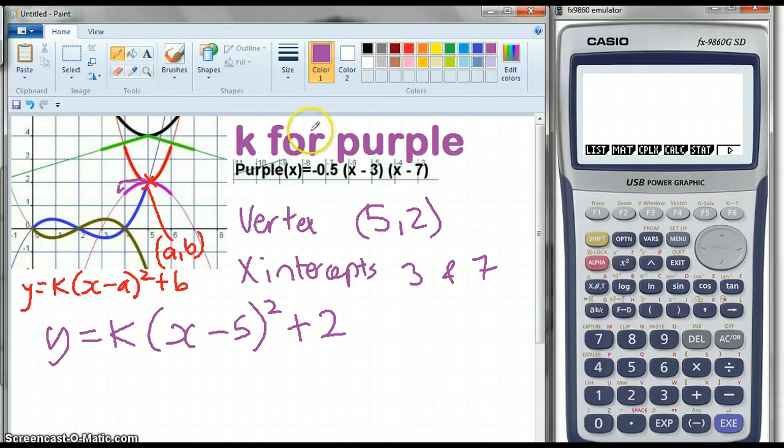I need to sub a point in. So the point I'm going to use in this case, to confuse matters, is actually going to be that point there, which is also a vertex. So we're going to sub x is 3, y is 0, into x, y.